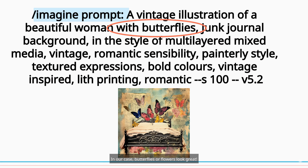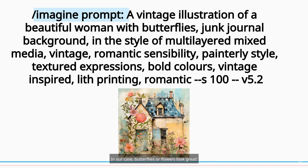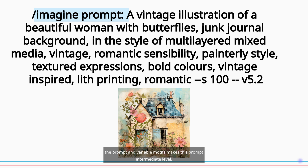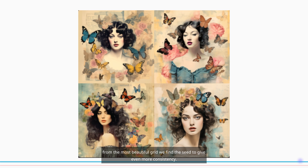Motifs help create coherence. In our case, butterflies or flowers look great. Having more than three combined styles without breaking the prompt and variable motifs makes this prompt intermediate level. From the most beautiful grid, we find the seed to give even more consistency.